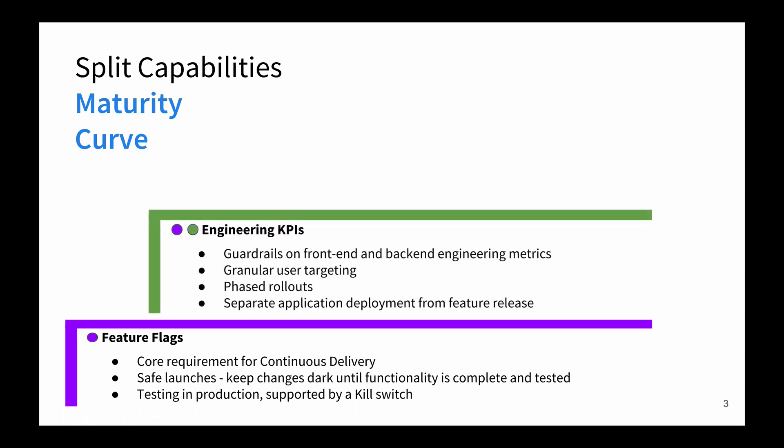Functional and performance issues are mission-critical concerns for any application. Key engineering metrics such as API response and page load time can be impacted by each feature. Split correlates relevant engineering KPIs back to the feature changes that are impacting them, while granular user targeting supports robust phased rollout plans.